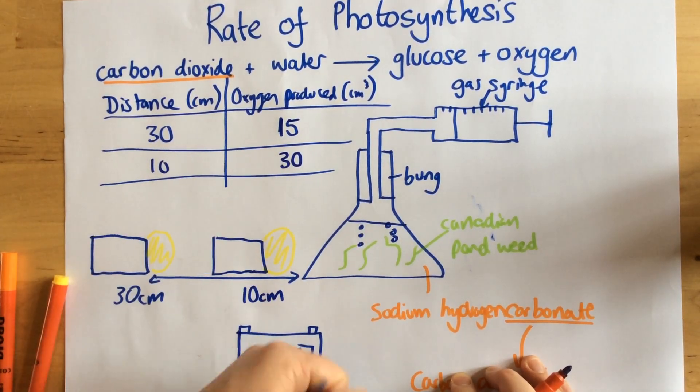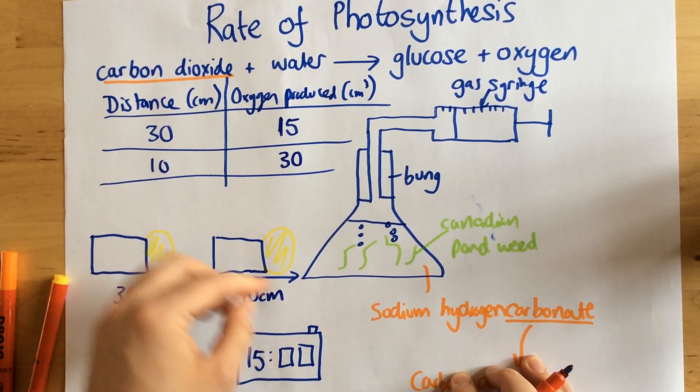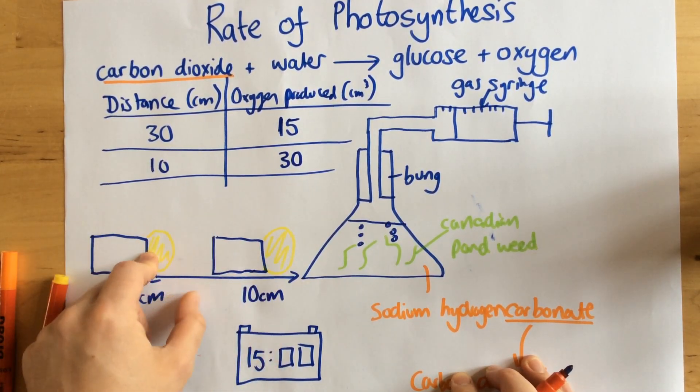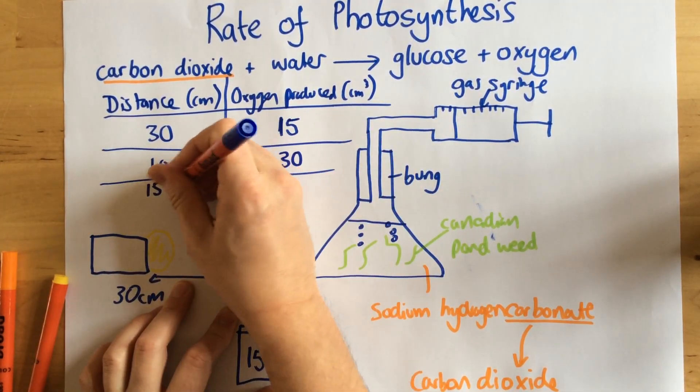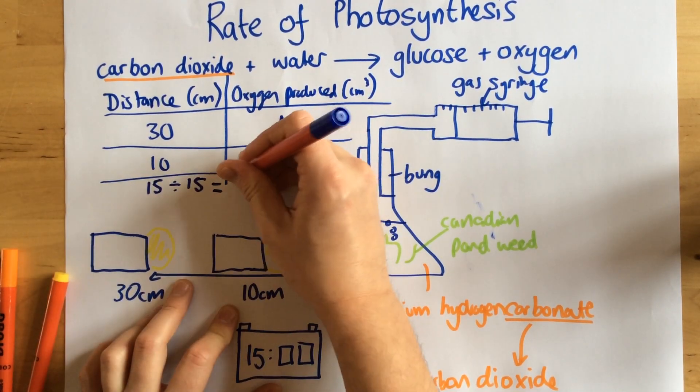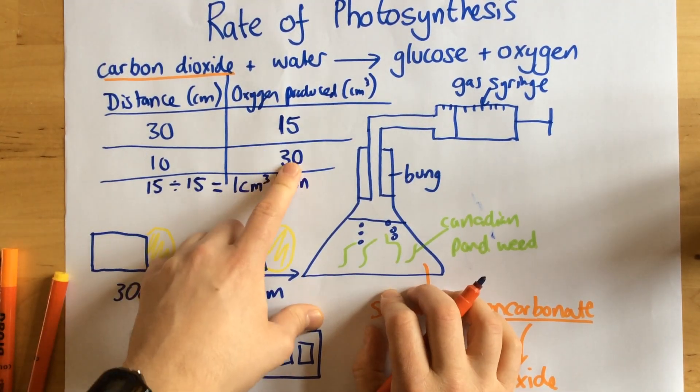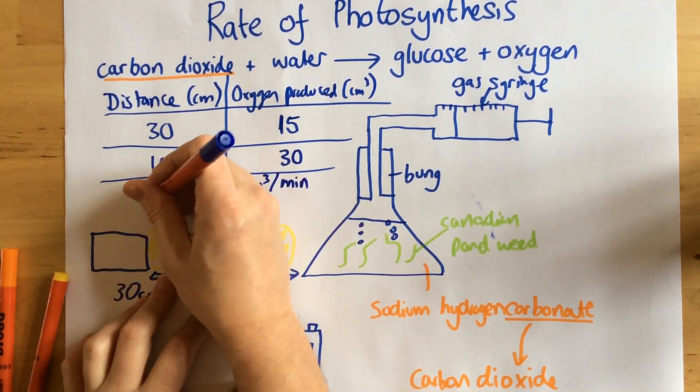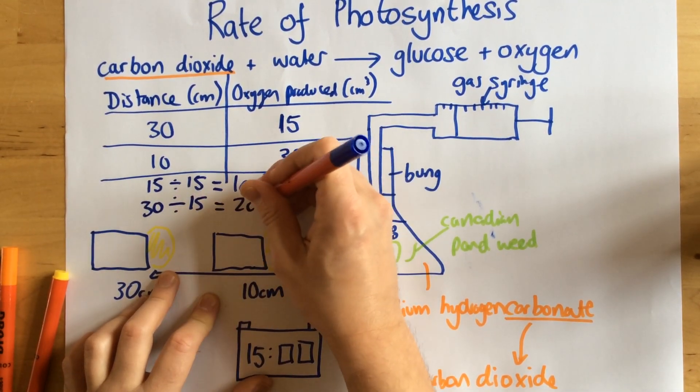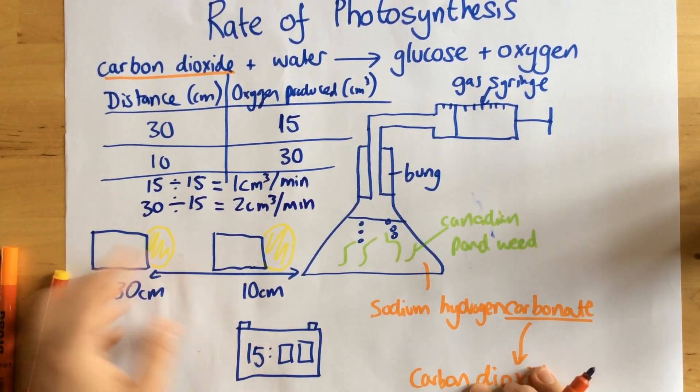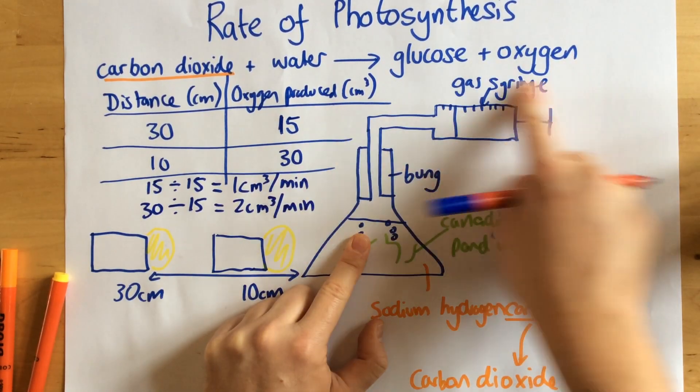Now let me quickly show you how to find out the rate of oxygen production. So we timed it for 15 minutes. Each of these experiments was for 15 minutes. So the first one, if we did 15 centimeters cubed, we just need to divide it by the number of minutes, which would give us 1 centimeter cubed per minute. This one here, because we had 30 centimeters cubed being produced in 15 minutes, this would be 2 centimeters cubed per minute. So we can see the closer the lamp, the greater the rate of photosynthesis, because we've collected more oxygen.